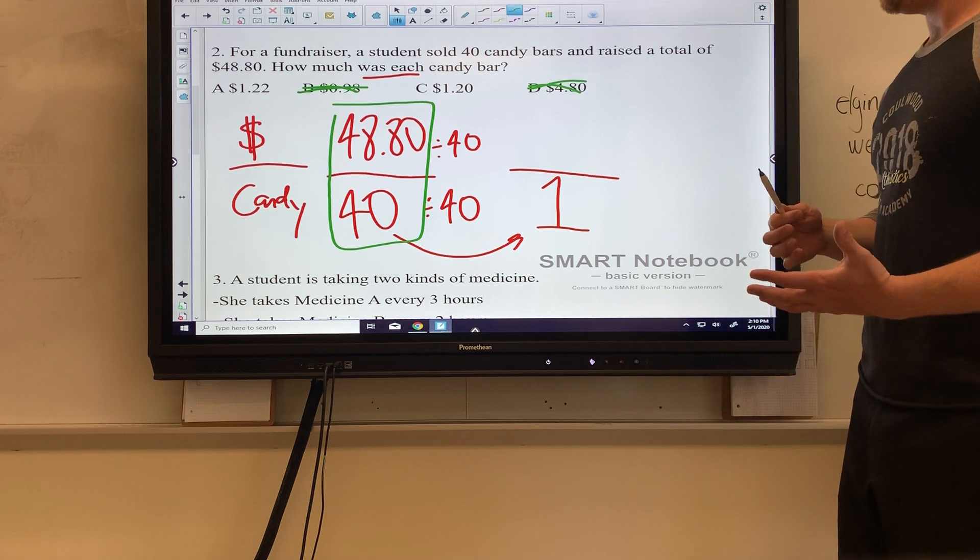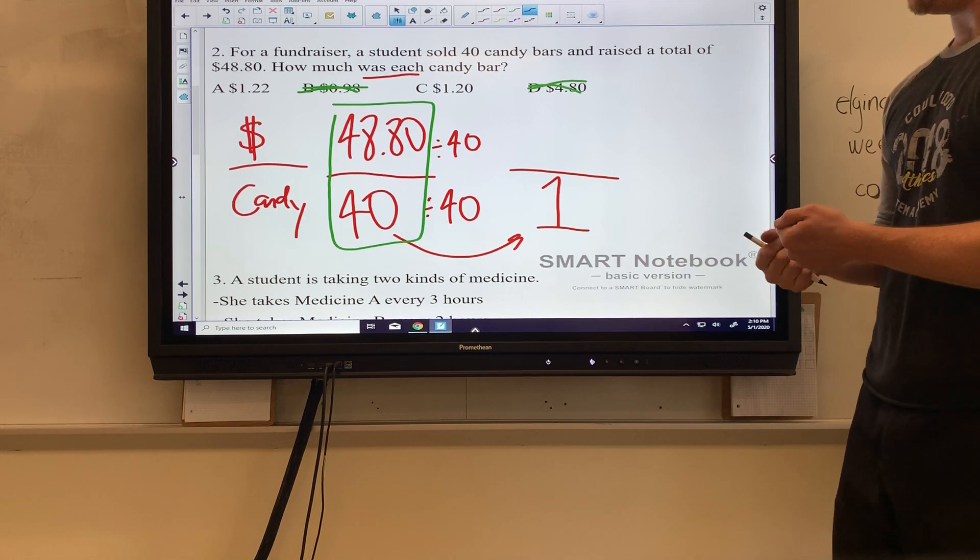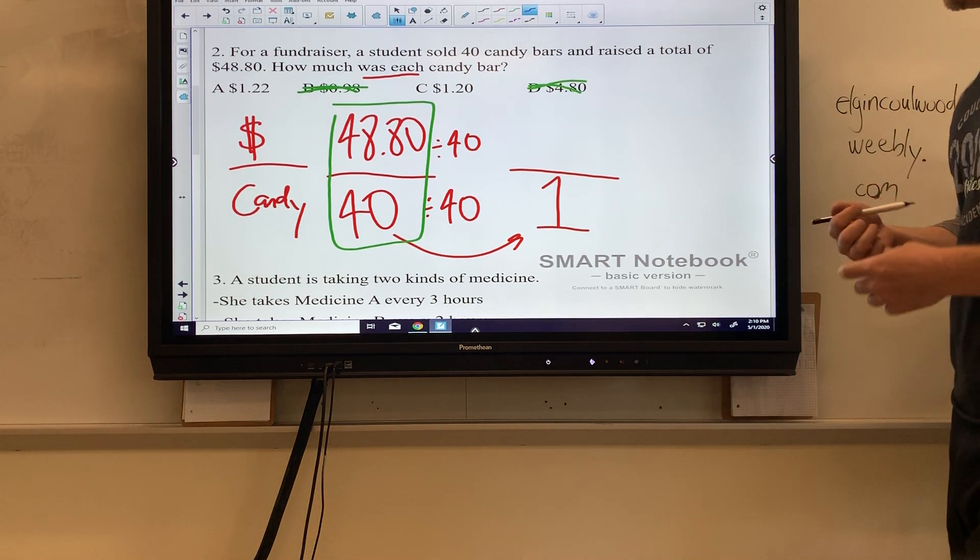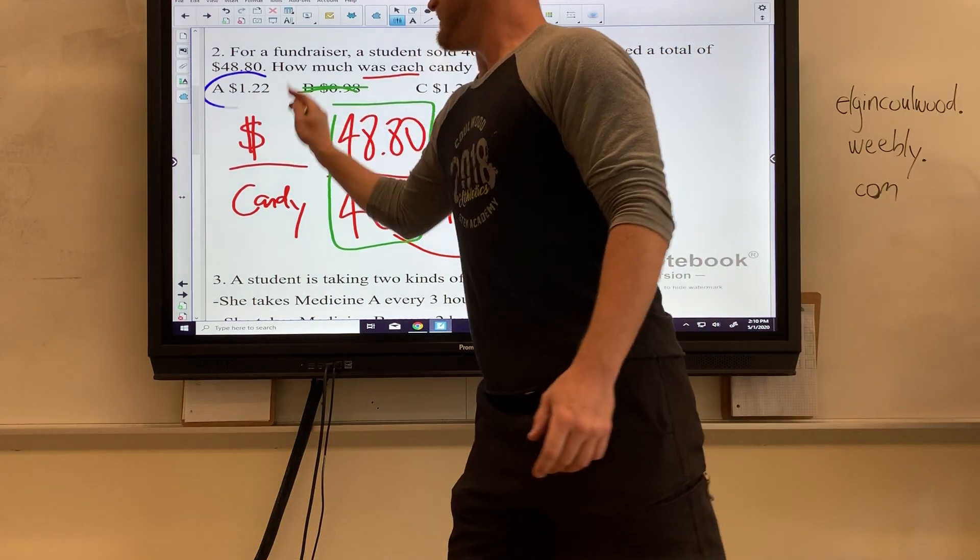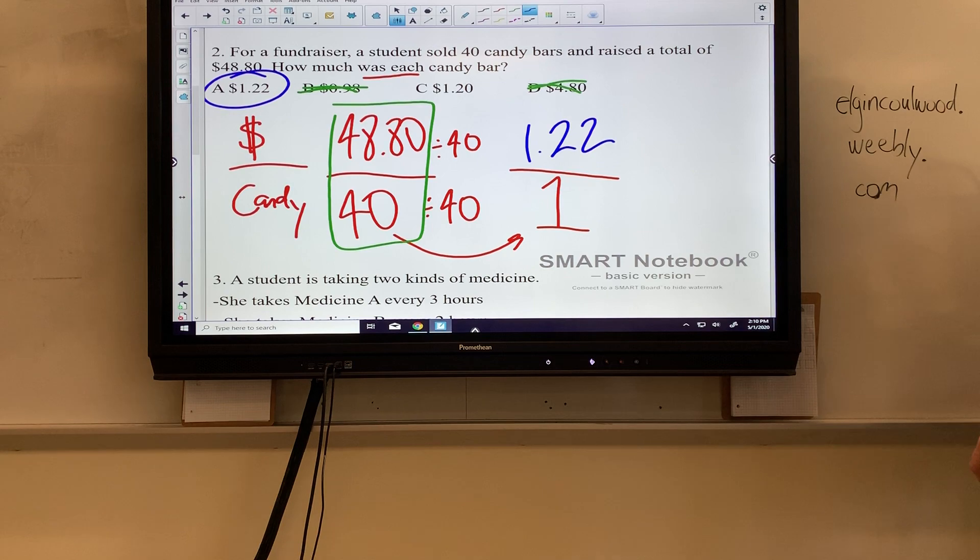Between A and C, we just divide it out. Take your calculator or do the long division if you're an all-star. 48 dollars and 80 cents divided by 40 gives me 1.22, also known as $1.22.